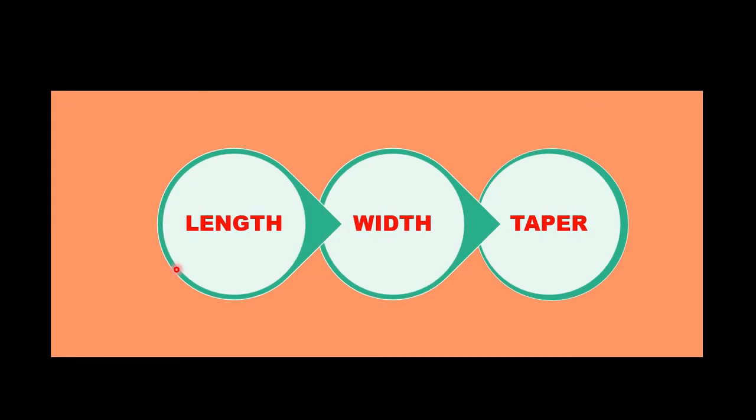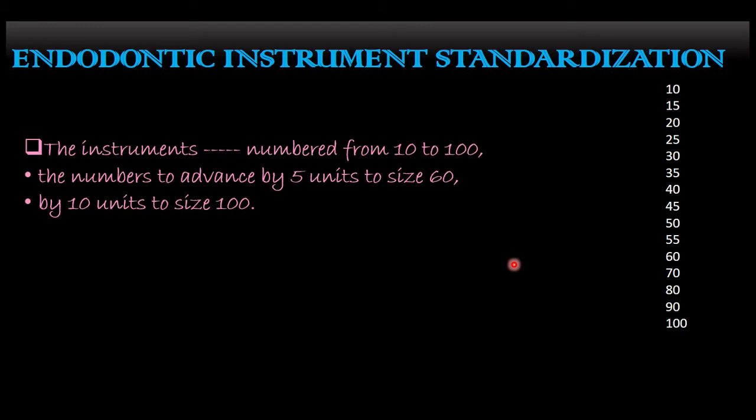Ingell and Levin established a logical nomenclature for a standardized instrument so that all manufacturers could confirm to the length, width, and taper of the instrument to a specific standard.